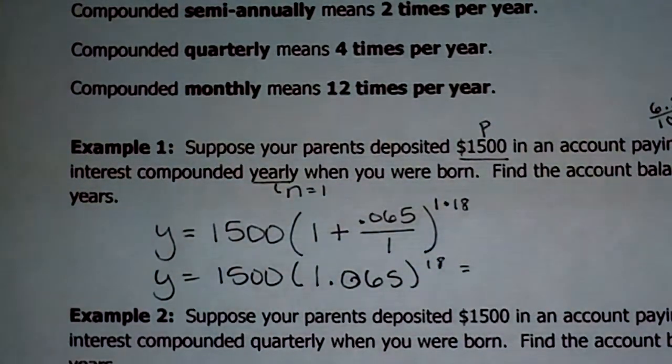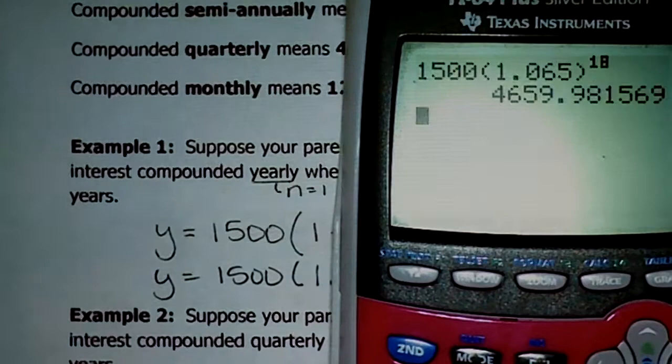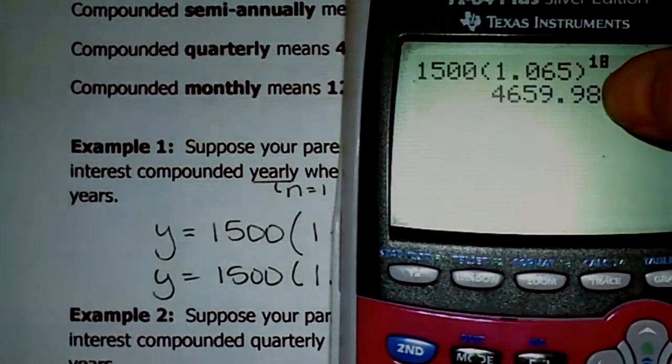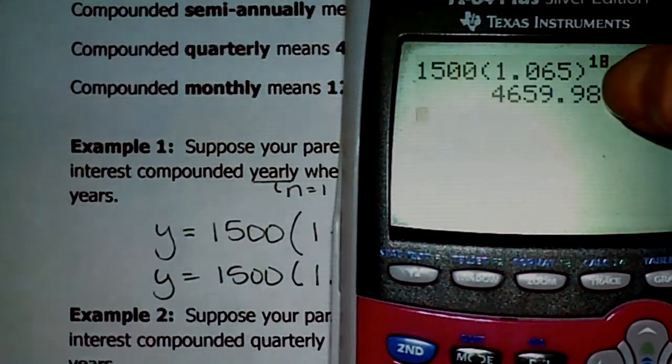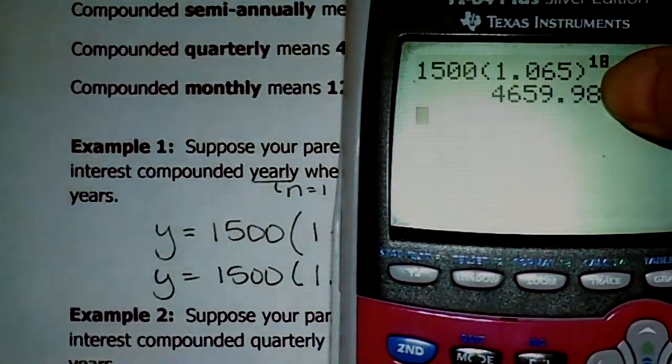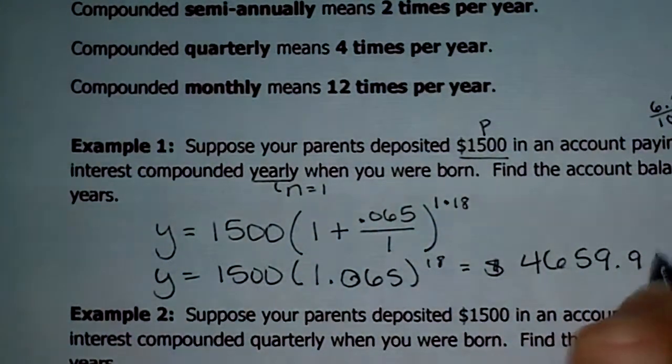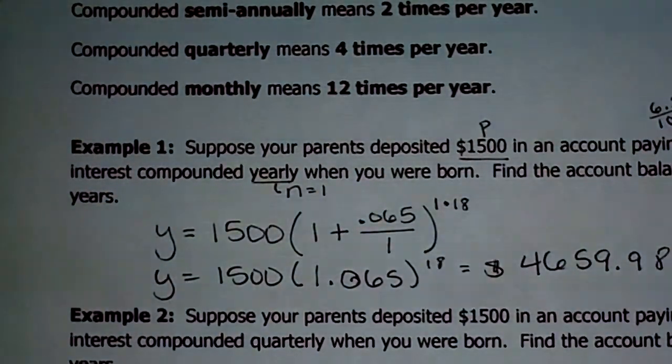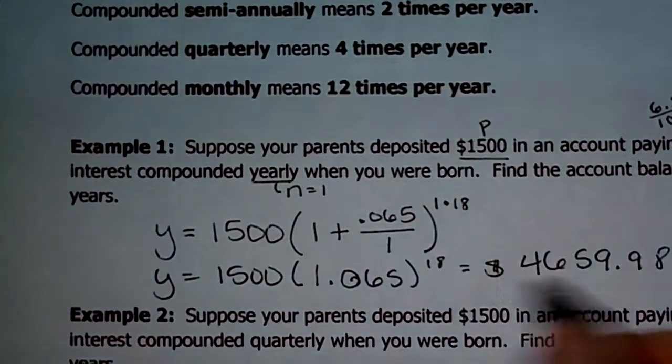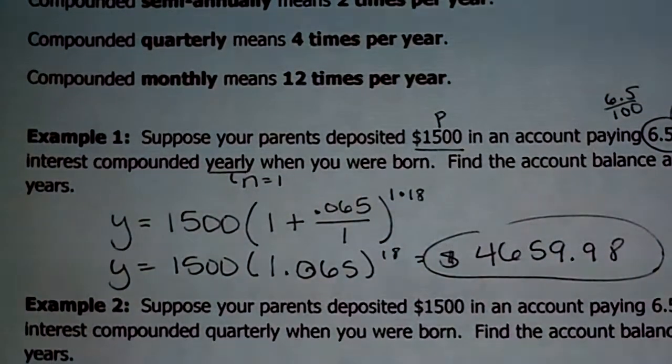So type all that in. Type in 1,500 times the quantity of 1.065 to the 18th power. And when you do that, you're going to get this decimal. We're dealing with money, right? So please don't write that entire thing. When you deal with money, you stop at the hundredths place. So I want to stop two places to the right of the decimal point. The number next to the hundredths place is 1. That means that I leave that 8 alone. So the amount of money that I'm dealing with here is $4,659.98. So this original amount of $1,500 that was invested, if you don't touch it, you leave it there for 18 years, that turns into that amount of money instead. Your money makes money for just sitting in a bank. Isn't that exciting?